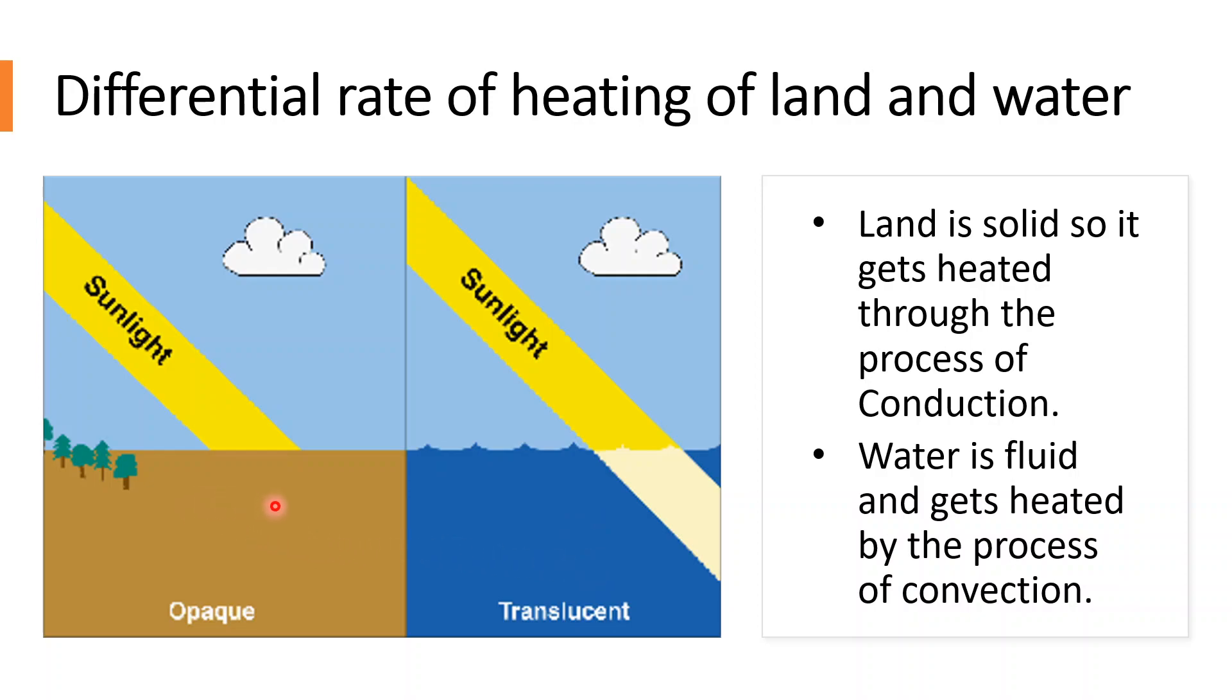The sun's rays, we can see over here, can penetrate the land up to a certain depth only. So, the heat is concentrated and distributed over a smaller volume. However, the rays of the sun penetrate the surface of the water to a greater depth. Thus, the heat from the rays is distributed over a larger area.